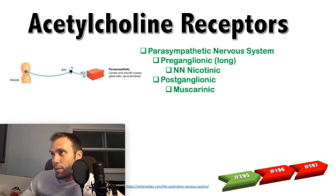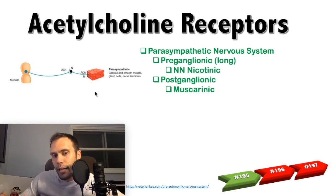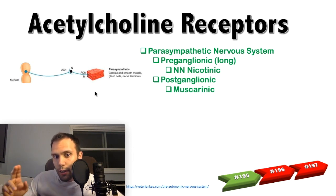Now looking at the parasympathetic nervous system, we have a neuron that synapses with another neuron before reaching its target — so there are two neurons: a pre-ganglionic and a post-ganglionic neuron. All pre-ganglionic fibers of the autonomic nervous system are cholinergic. That is very important: all pre-ganglionic fibers, whether parasympathetic or sympathetic, all use acetylcholine as their neurotransmitter in the pre-ganglionic fiber.